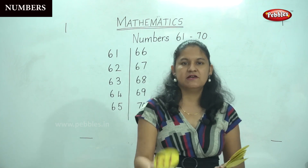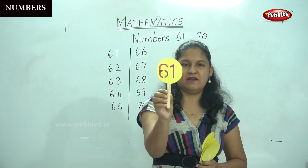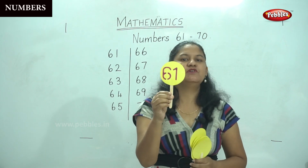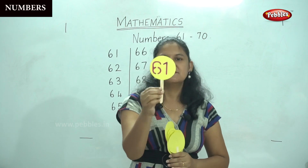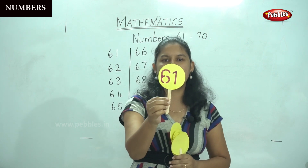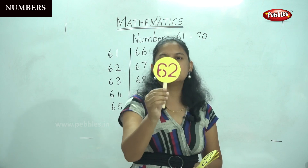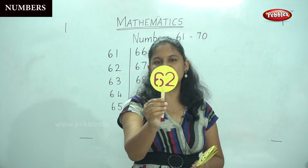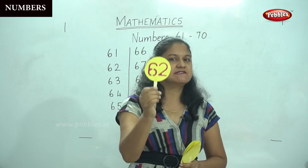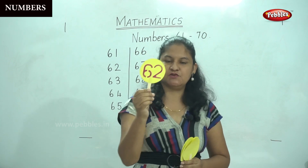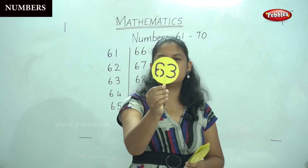So I have 6 and 1 — 61. I do hope you are saying it along with me. 6 and 1, 61. 6 and 2, 62. 6 and 2, 62.